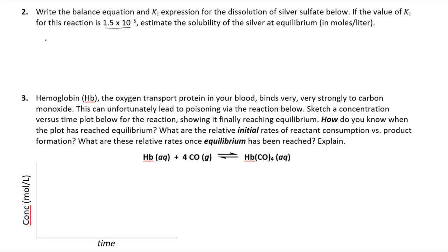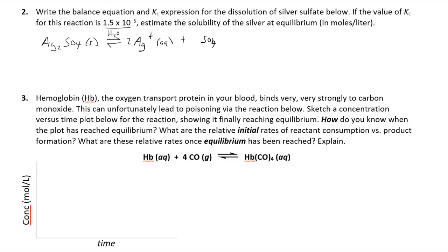Let's write the chemical equation. Silver has a 1+ charge typically, and sulfate has a 2− charge. So we put those together — silver sulfate solid — and it's an equilibrium. When we throw it into water, we get two moles of silver-plus aqueous, and one mole of sulfate 2− aqueous.